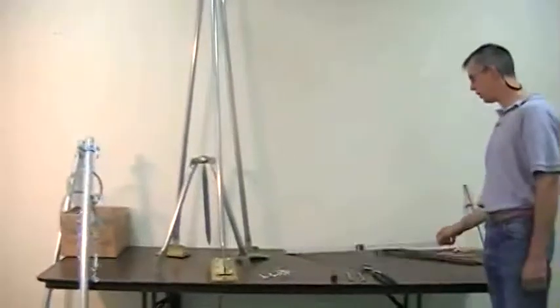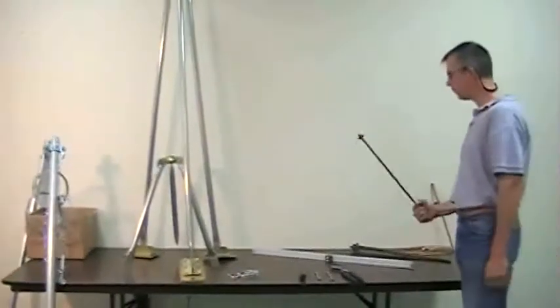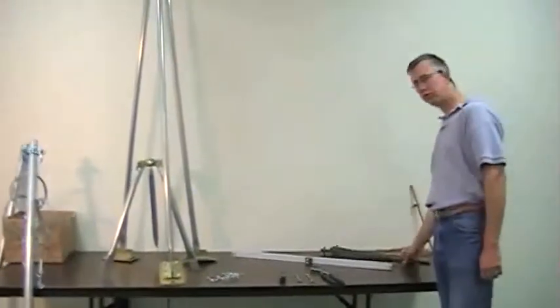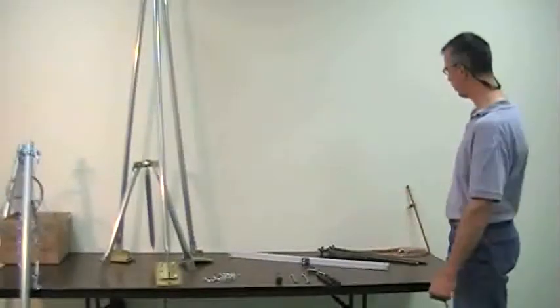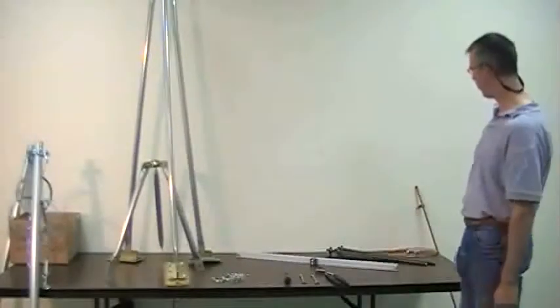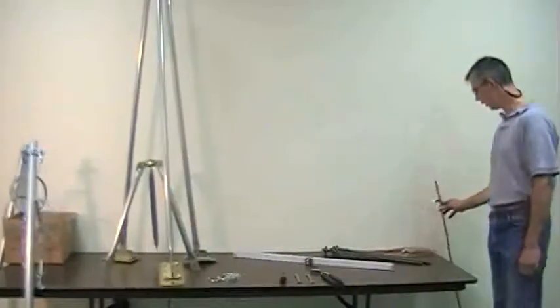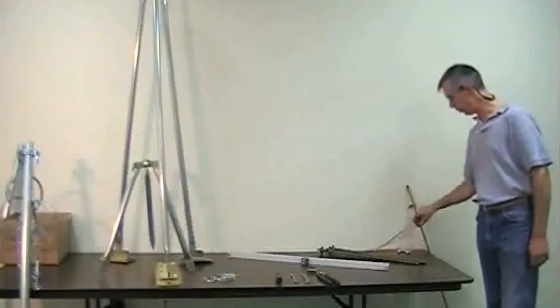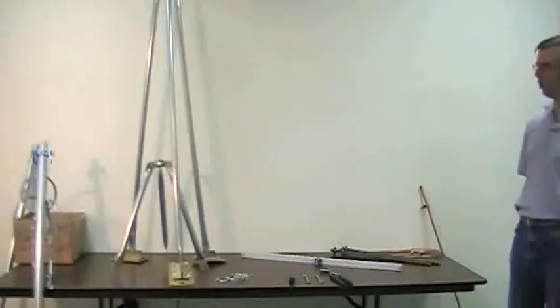Here we have our cross arm, our three stakes that we'll be actually using on the tripod itself. We'll use another set of stakes for the guy wires that are on the upper mast. And here we have our ground rod and cable that we'll use to ground the whole device to the earth.